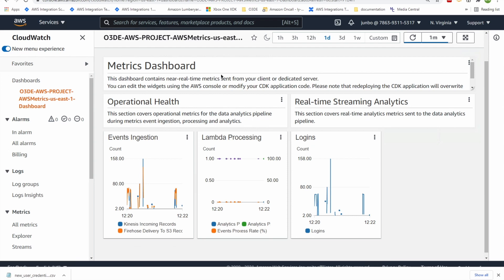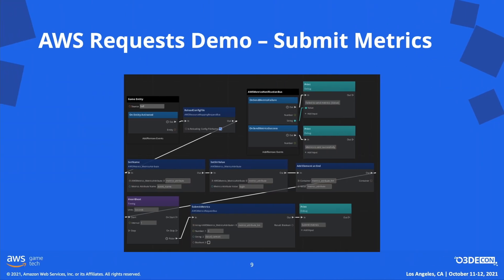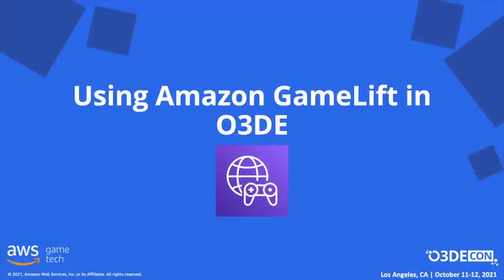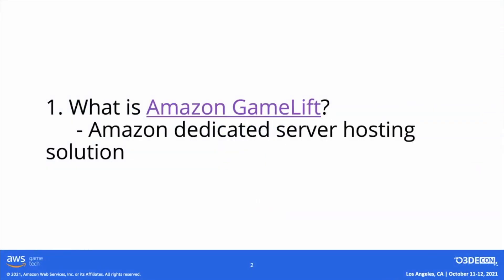I hope the demo today can give you some basic idea about using AWS in O3DE. Now I'll hand over to my colleague Guanzhou to show you the GameLift integration. Thank you, Junbo. Hello everyone, this is Guanzhou Liu. Today I'm going to cover the topic of using Amazon GameLift in O3DE. Let's have an overview of Amazon GameLift. Amazon GameLift is a dedicated game server hosting solution that deploys, operates, and scales cloud servers for multiplayer games. GameLift uses the power of AWS to deliver low latency, low player wait times, and maximum cost savings.